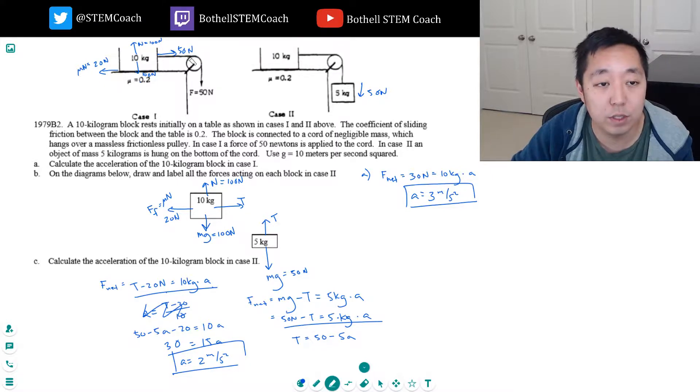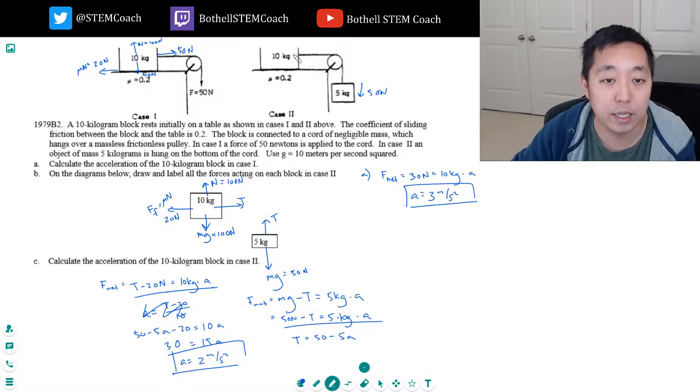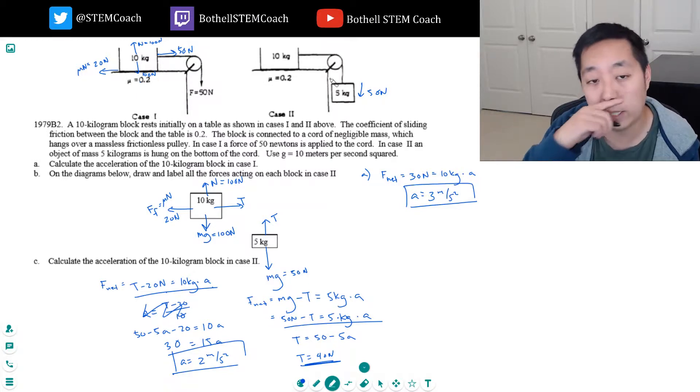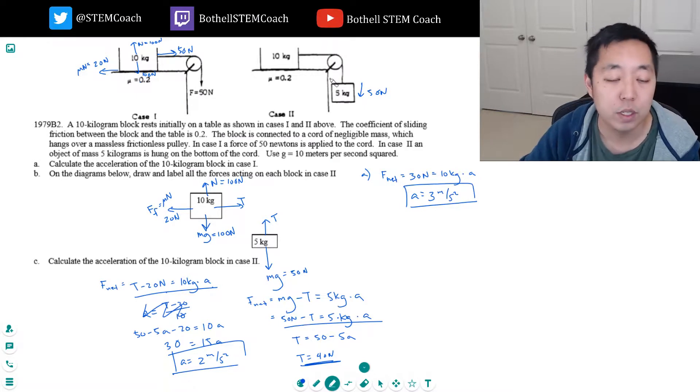The tension in this guy is 50 newtons because this force translates all the way to here. But here what's happening is the tension, we can solve for it. It's 50 minus 2 times 5. So the tension would be 50 minus 10 or 40 newtons. See? We have less tension in this rope, even though it's acting because of gravity. That's what makes the problems different.